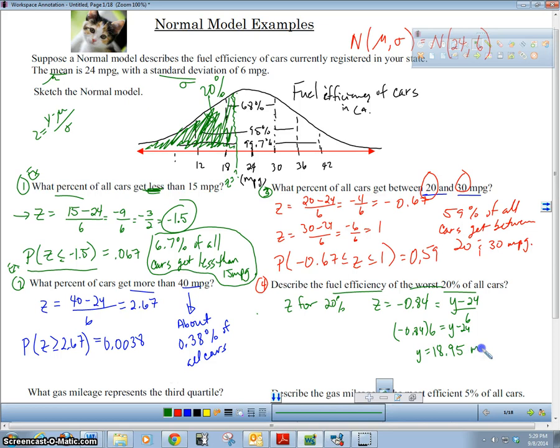18.95 miles per gallon. Now this is your work that you should show, but on the AP exam what they really want to know is that you know what you're talking about in terms of the normal model. I really can't see this as anything more than a multiple choice question, but if it is on the free response, you're going to want to shade in your normal model and point out that this is 20 percent.